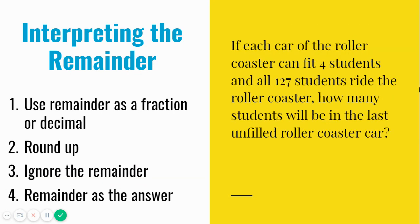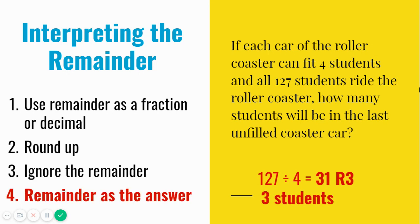Now check out this problem. If each car of the roller coaster can fit 4 students, and all 127 students ride, this time the question asks, how many students will be in the last unfilled roller coaster car? We know that there are 31 filled cars, and there's one last car with the remaining students. In this case, we want to look at just the remainder to answer the question. Since there is a remainder of 3, there are 3 students in the last unfilled roller coaster car. This is an example of when the remainder is the answer.